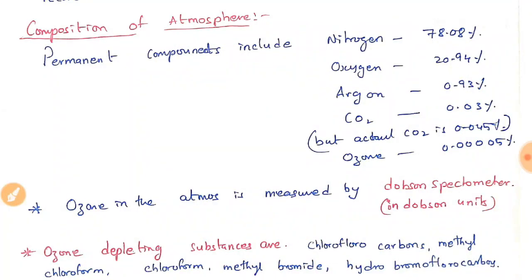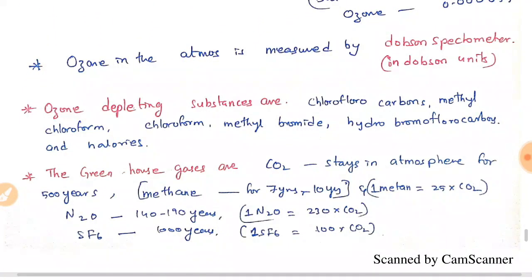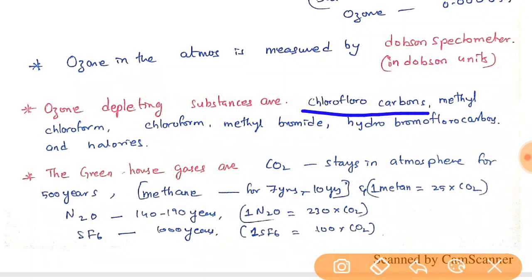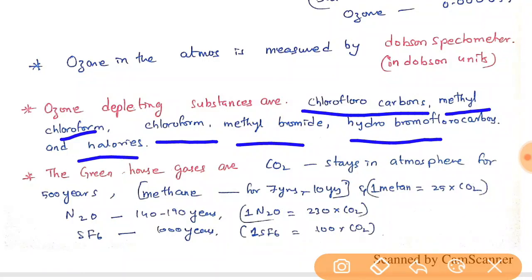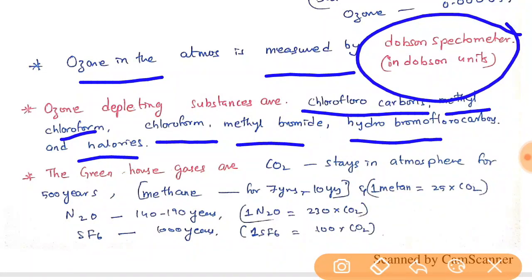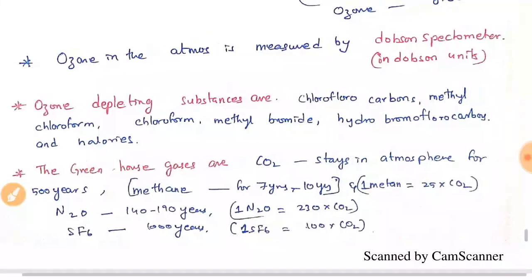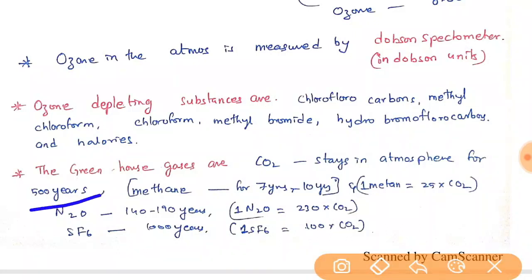Ozone connects to ozone-depleting substances — substances present in our atmosphere that deplete the ozone layer in the stratosphere. These include chlorofluorocarbons (CFCs), methyl chloroform, chloroform, methyl bromide, hydrobromofluorocarbons, and halons. Ozone is measured by a Dobson spectrometer and the unit is Dobson. Greenhouse gases, responsible for global warming, include CO₂ — which stays in the atmosphere for 500 years — methane, nitrous oxide, and SF6.